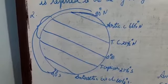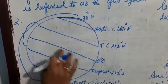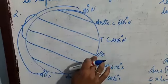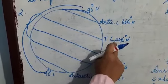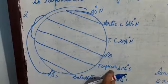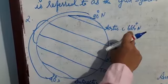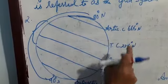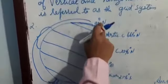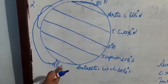The key parallels are: zero degree latitude is the equator; 23 and a half degree north is the Tropic of Cancer; 23 and a half degree south is the Tropic of Capricorn; 66 and a half degree north is the Arctic Circle; 66 and a half degree south is the Antarctic Circle; and 90 degree north is the North Pole, while 90 degree south is the South Pole.